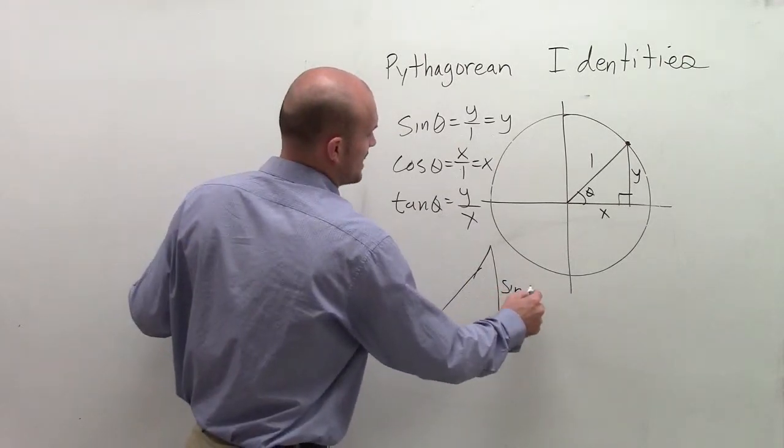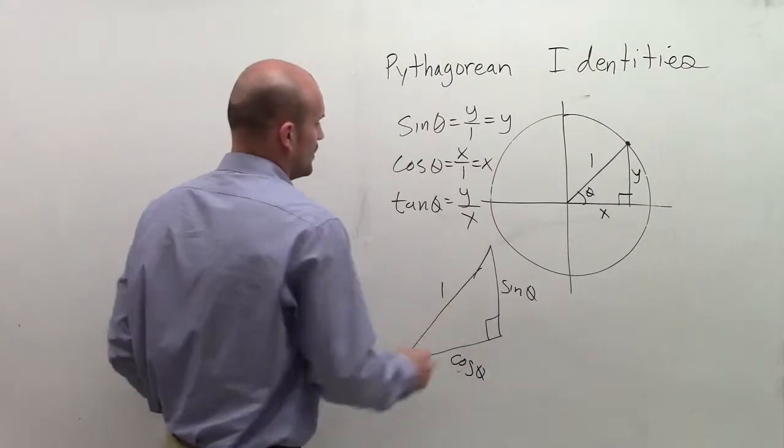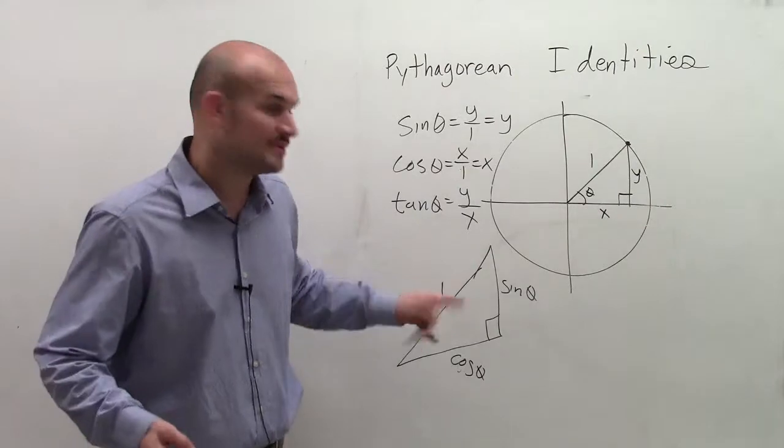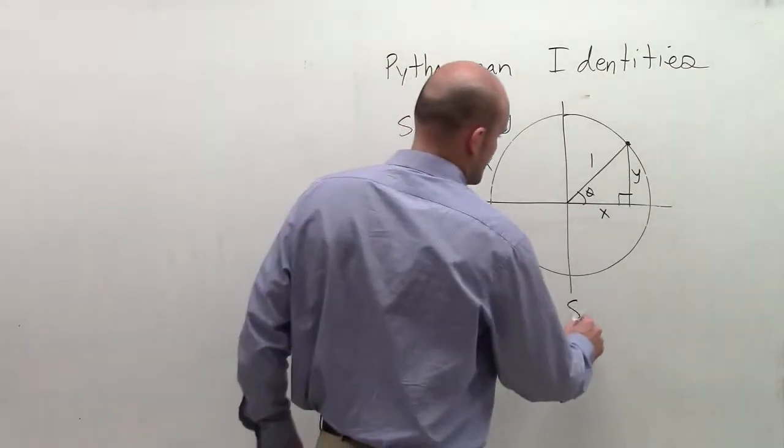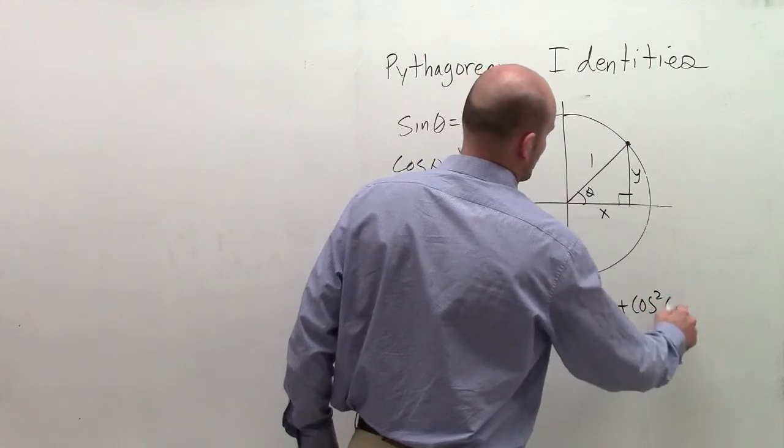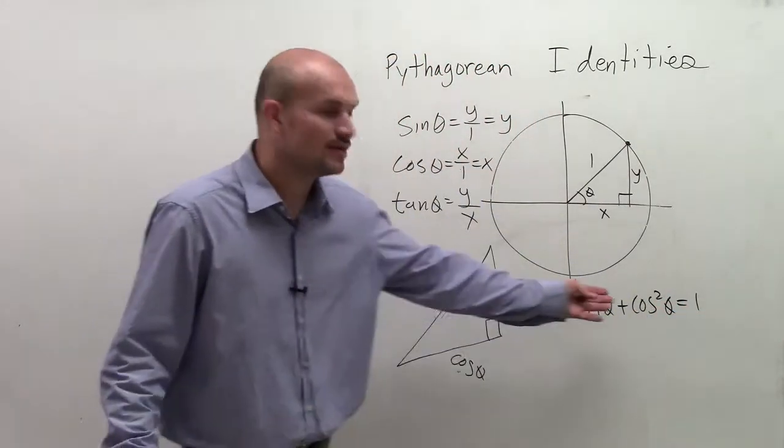I can say sine of theta and also cosine of theta. If you have sine of theta and cosine of theta with 1, by using the Pythagorean theorem, you know that sine squared of theta plus cosine squared of theta has to equal 1 squared, or just 1.